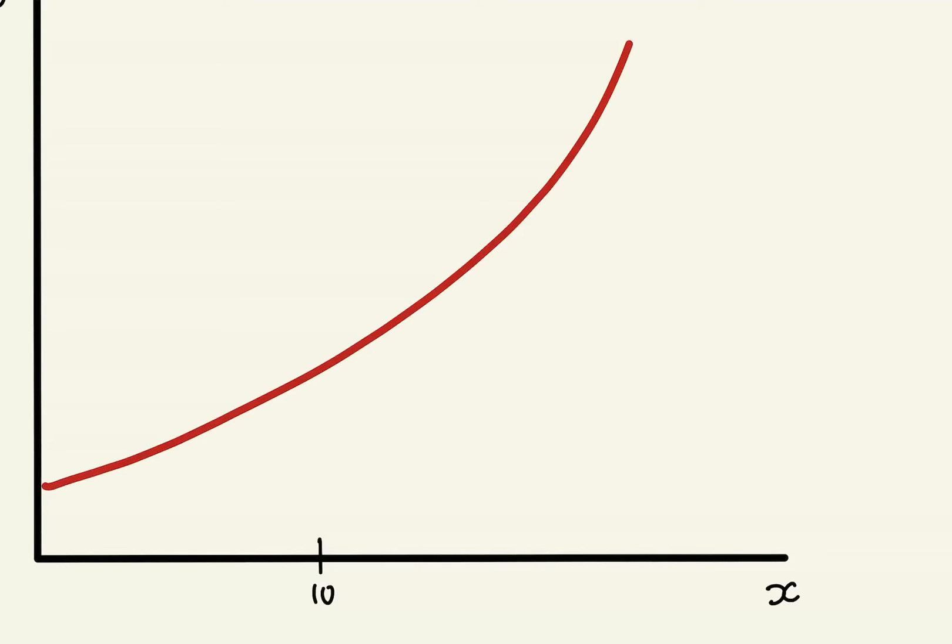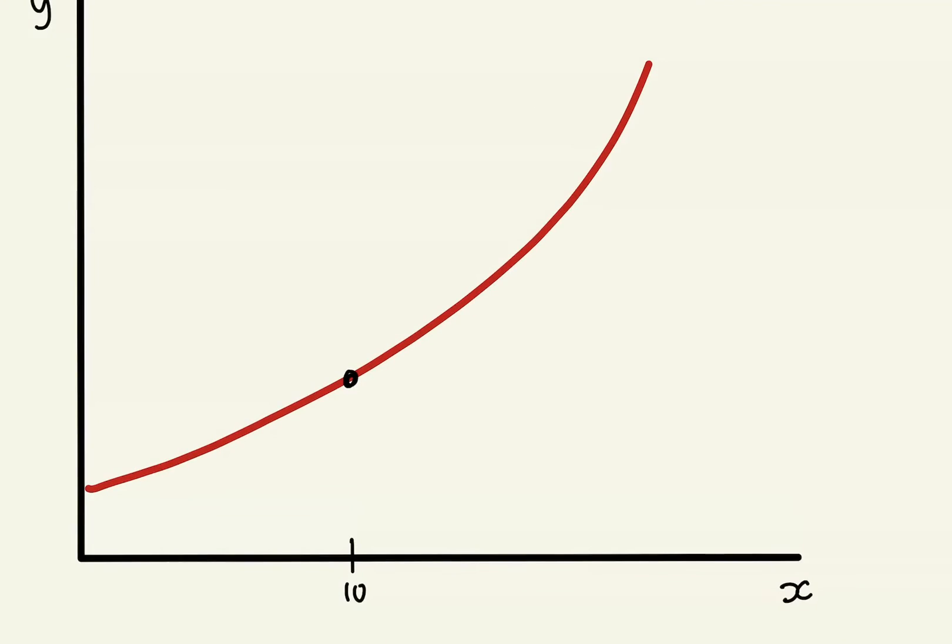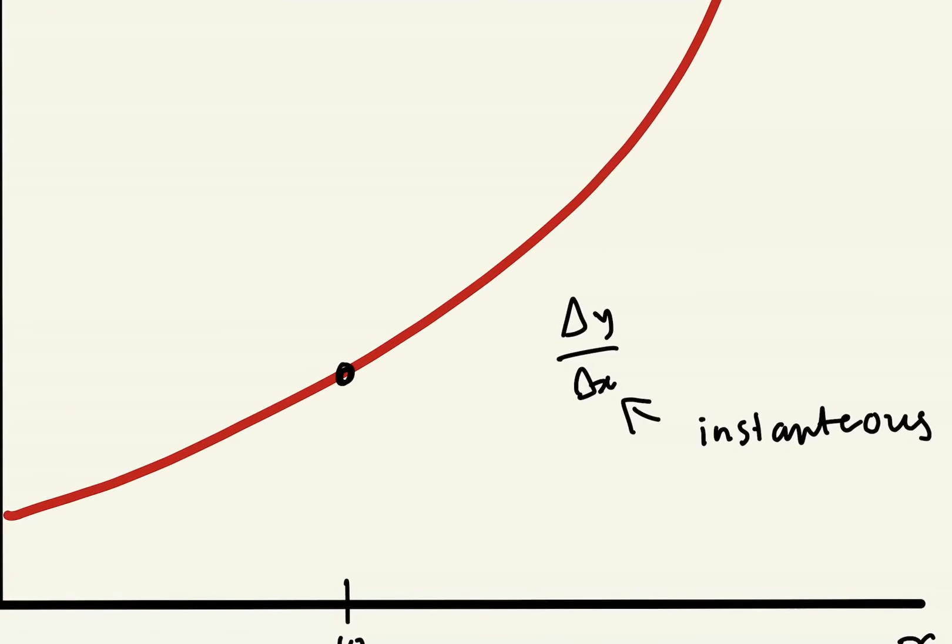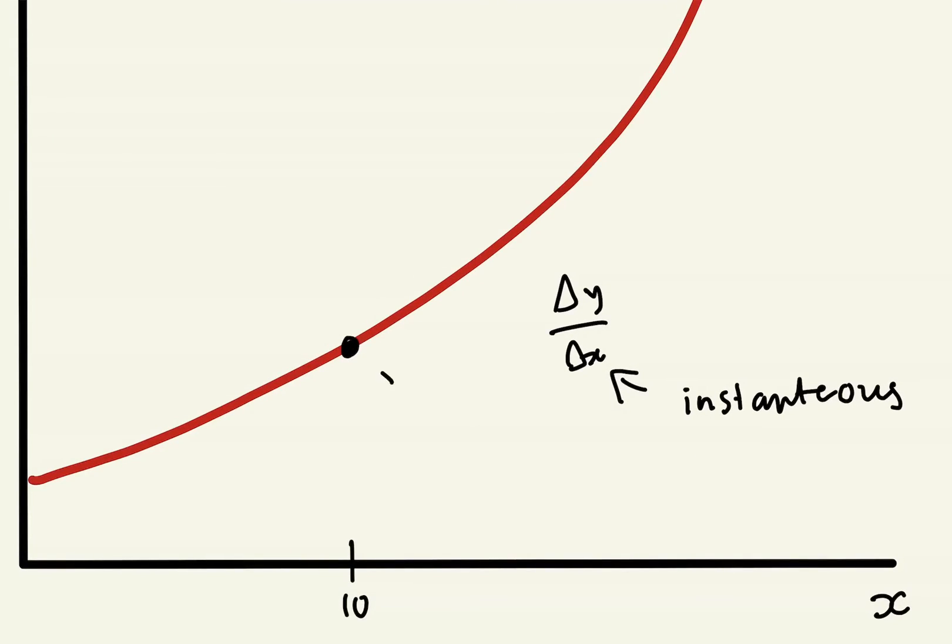With differential calculus, what you're really doing is you're doing the change in y over change in x, but the change in x becomes really, really small. And the smaller it becomes, this gives you the idea of instantaneous velocity or slope. That's really what differentiating means. Instantaneous - you could tell that at 10 seconds, how fast is the runner moving at this specific point.